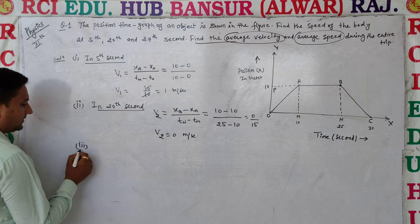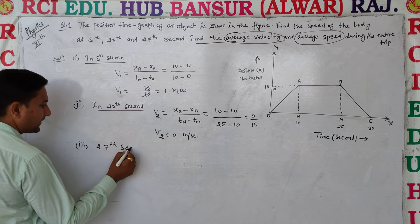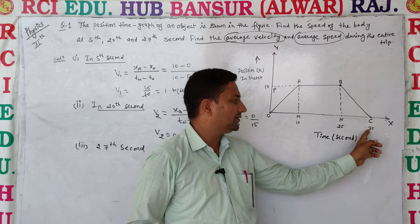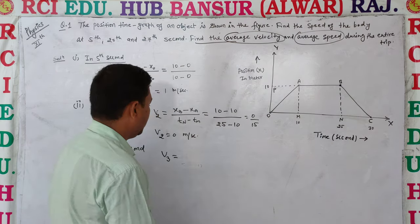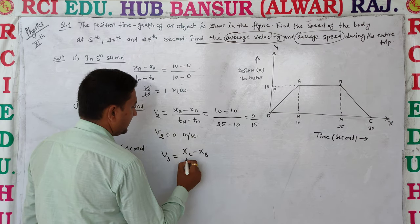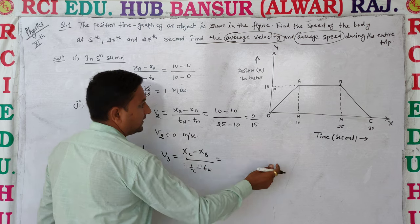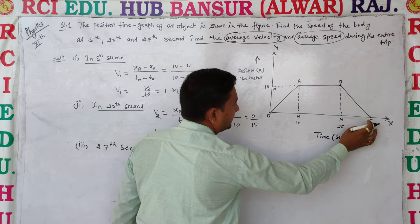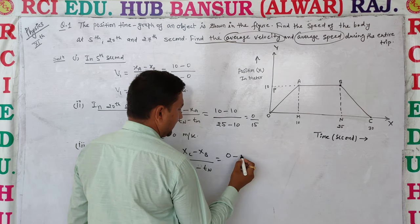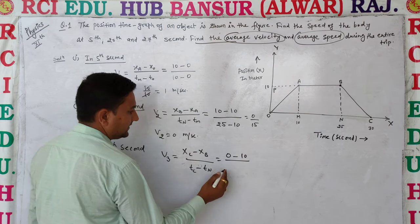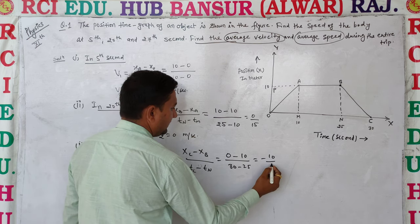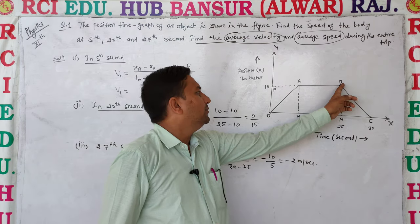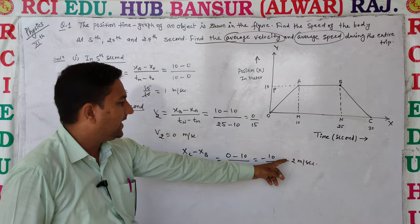Third, the speed at the 27th second. Let v3 be the velocity. The 27th second lies between 25 and 30 seconds, which is segment B to C. Distance is (x_c - x_b) divided by (t_c - t_n). Here x_c = 0, x_b = 10 meters, t_c = 30 seconds, t_n = 25 seconds. So v3 = (0 - 10) / 5 = -10 / 5 = -2 meter per second. The body on segment B to C is moving at -2 m/s.